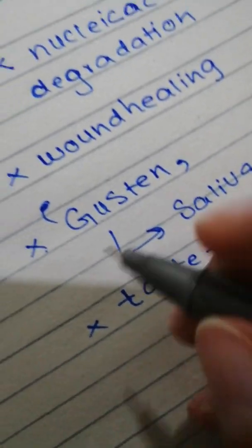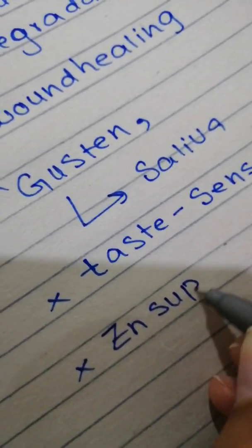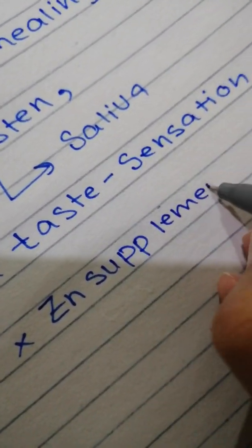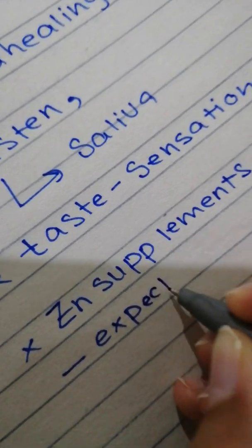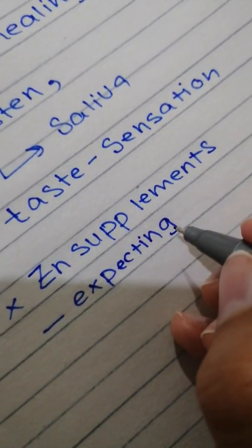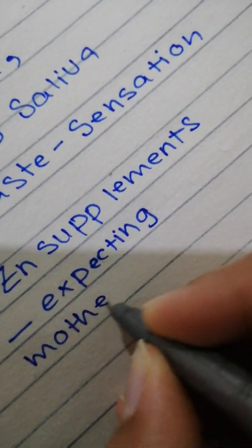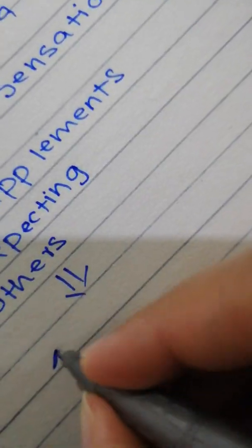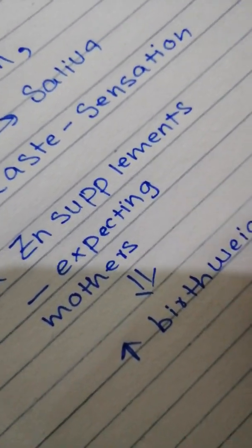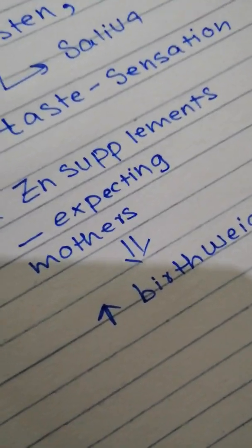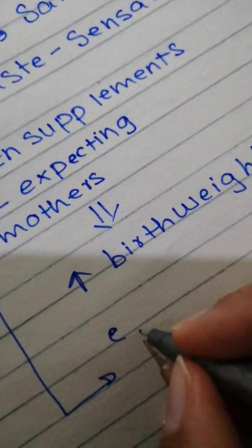This protein contains zinc, so if there is deficiency of zinc, there is loss of taste sensation because these gustin proteins will not be produced. Zinc supplements are given to expecting mothers, and it is believed that these supplements have a role in increasing the mean birth weight. If an expecting mother is deficient in zinc, it can lead to congenital abnormalities.